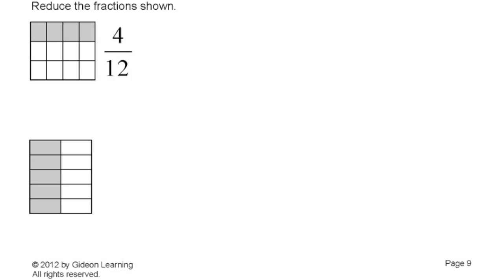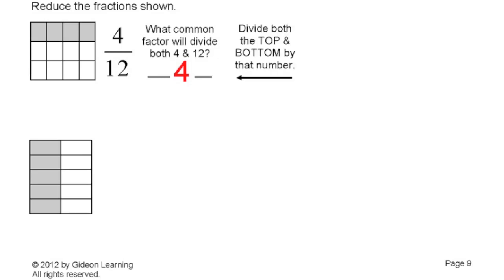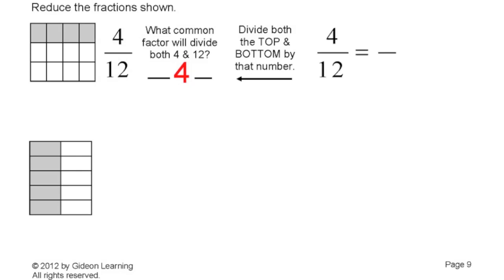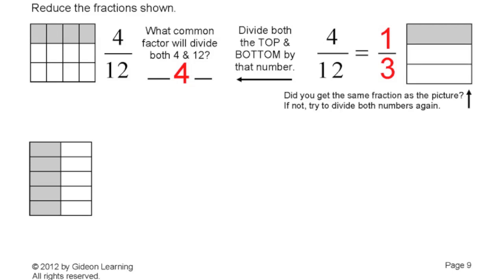So the next thing I need to think of is, okay, what common factor will divide both 4 and 12? First thing that comes to my mind is 4. 4 goes into 4 and 4 goes into 12. So I'm going to divide both the top and bottom by that number. So I have 4 twelfths. 4 divided by 4 is 1. 12 divided by 4 is 3. So my final answer is one-third. Now you can see the visual example here is basically I still have the exact same rectangle, and now you can see one-third of it is shaded, just like the previous rectangle there on the left. Now you can notice that one-third is our fraction and one-third is our picture. So obviously this works. If it didn't work, then obviously you need to try to divide the numbers again.